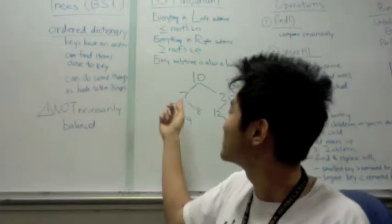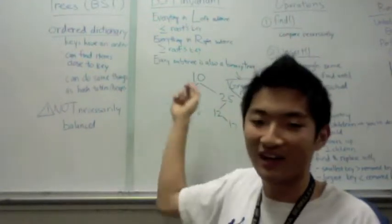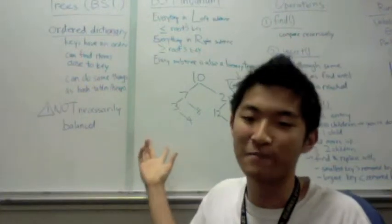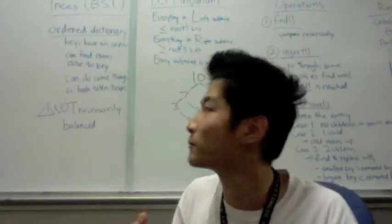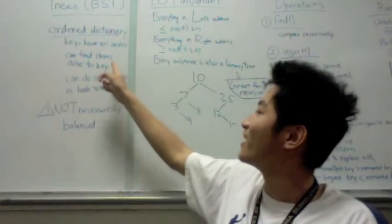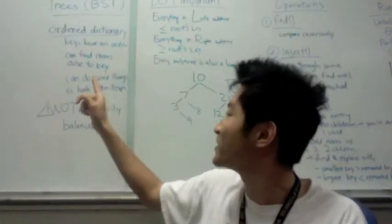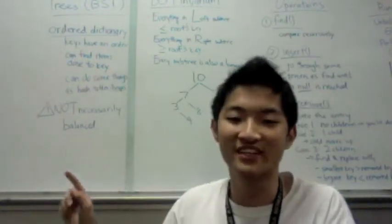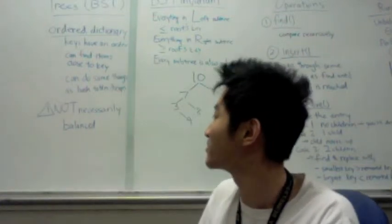So usually it's easiest to illustrate them as numbers, but of course they don't have to be numbers. All they have to be are comparable objects. And for an ordered dictionary, you can find items close to the key because the keys have a certain order.